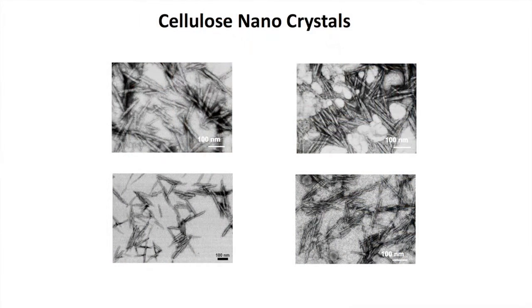Cellulose nanocrystals are very small particles that come from cellulose after being liberated with chemicals. They're about 15 nanometers by 150 to 250 nanometers.